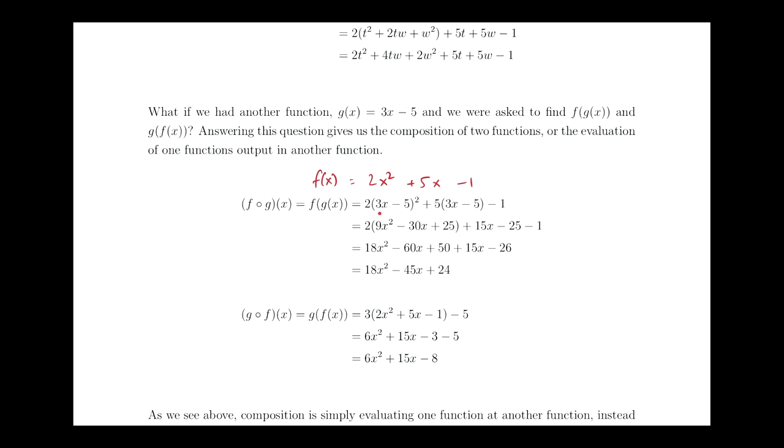So g of x is this function 3x minus 5, because that was defined right here. So wherever I see an x, which is here and here, I'm going to replace it with 3x minus 5, which is that function itself. And now we can apply the square formula. We can either apply the formula or we can foil this out. I'll leave you guys to verify that this indeed is foiled correctly. We can distribute the 5 in here and then keep the negative 1 attached. And this algebraically can be cleaned up into 18x squared minus 45x plus 24. So this is basically the answer to the question, what would happen if you were to plug in a function g of x into the function f of x?